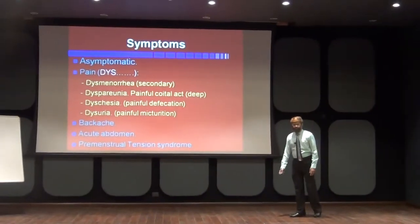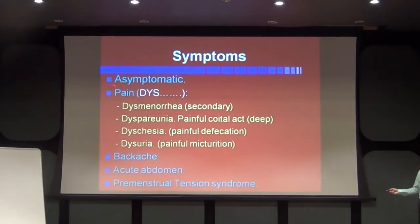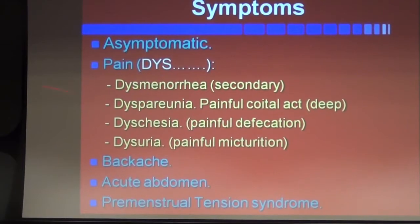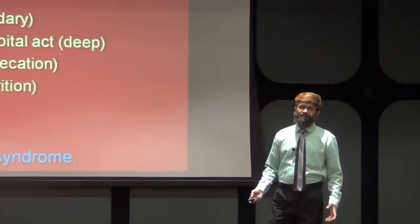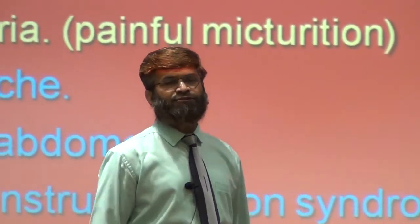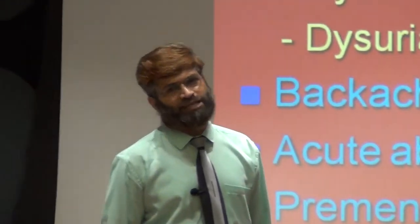For symptoms, many cases remain asymptomatic. But if symptoms do come, remember the 'dys' word — which includes first, dysmenorrhea, specifically secondary dysmenorrhea. Dysmenorrhea is defined as painful menstruation of sufficient magnitude which incapacitates the female from day-to-day activity and compels her to resort to painkillers. In endometriosis, the dysmenorrhea is secondary because there is a cause outside the uterine cavity.